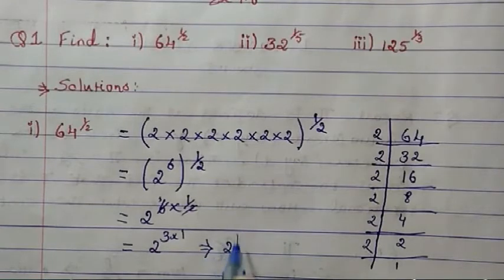We get 2^3, which is equal to 2 × 2 × 2. So what will be the answer? 2 × 2 = 4, 4 × 2 = 8.